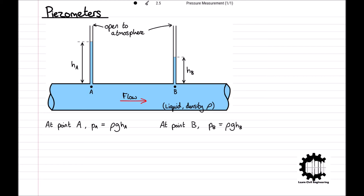The two piezometers can be used in combination to measure the pressure difference p_a minus p_b between the two points where p_a minus p_b equals rho g h_a minus rho g h_b which equals rho g times h_a minus h_b.